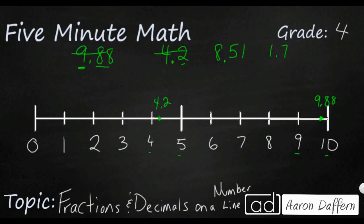8.51 is almost right in the middle. 8.5 is exactly in the middle. So let's just go ahead and put that right in the middle. 8.51 is just a hair past. And then finally 1.7 is almost all the way up to 2.